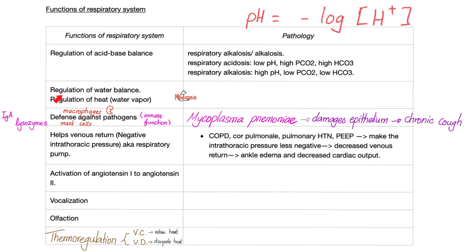The respiratory system is also responsible for regulating your water balance, because you keep breathing in and out air that contains water vapor. Your respiratory system is robust because it includes macrophages, mast cells, and lysozymes — enzymes that cause lysis of foreign invaders. In your nose there is IgA, because IgA ascends to the mucous membranes. So whenever you're talking about a mucous membrane — your mouth, nose, larynx, pharynx — they have IgA, an antibody that destroys foreign invaders.